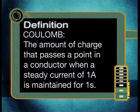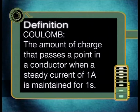One coulomb of charge is the amount of charge that passes a point in a conductor when a steady current of one ampere is maintained for one second. Now let's practice using our equation q is equal to i times t.